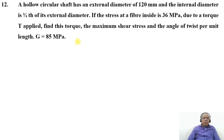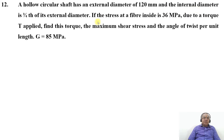In this video we are going to take up one more problem on shafts. Problem number 12: a hollow circular shaft has an external diameter of 120 mm and the internal diameter is three-fourths of its external diameter. If the stress at the inner fiber is 36 MPa due to a torque T applied, find the torque, the maximum shear stress, and the angle of twist per unit length. Take G equals 85 MPa.